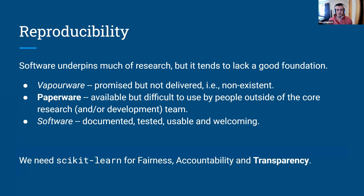There are three things I want to go over. There's vaporware — 'I'll upload this code once the paper is accepted' and then it never gets uploaded. There's paperware — the code is uploaded but it's very difficult for someone else to understand or use, maybe missing dependencies or poorly commented. And then there's what we wanted to produce: an open-sourced package that's documented, tested, usable, and welcoming — with unit testing, online examples, tutorials, and accessible API documentation. Essentially, we wanted to make the scikit-learn for fairness, accountability, and transparency.